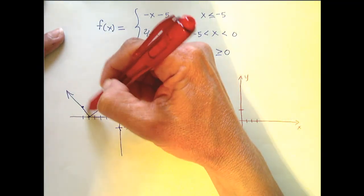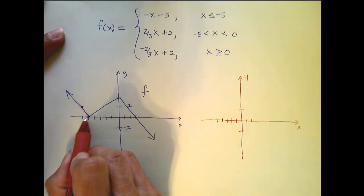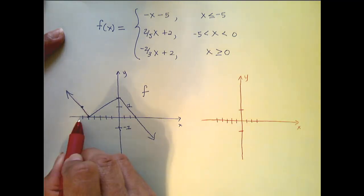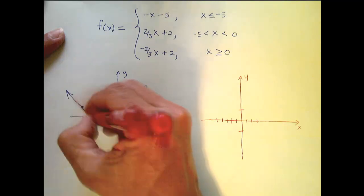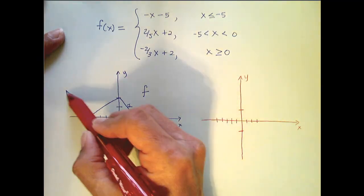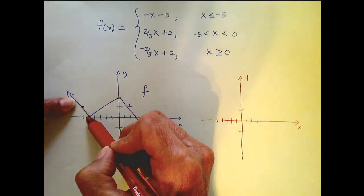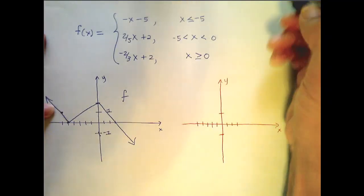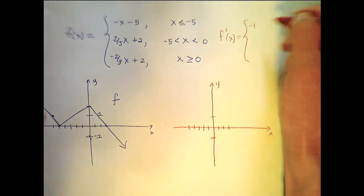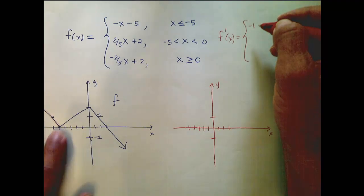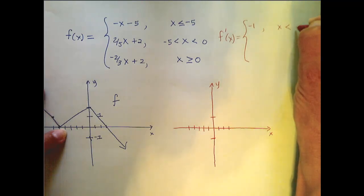Now let's talk about the derivative function for this piece of f. For any x value when x is less than or equal to negative 5, the tangent line to the curve at any of those points will actually be the line itself. So the derivative function here is going to be just the constant function — the slope of this line, which is negative 1. So f prime of x equals negative 1, that's the slope of this line, when x is less than negative 5.